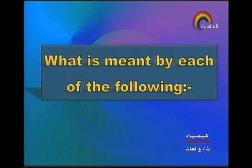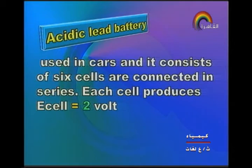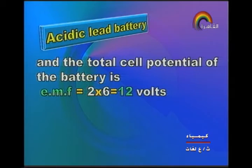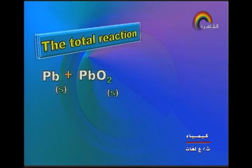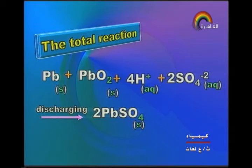Next type of question: what is meant by an acidic lead acid battery? It is used in cars and consists of six cells connected in series; each cell produces an electromotive force of 2 volts, and the total battery EMF is 2×6 = 12 volts. The total reaction: Pb + PbO₂ + 4H⁺ + 2SO₄²⁻ on discharging gives two molecules of lead sulfate PbSO₄ and two molecules of water. The EMF of one cell equals 2.05 volts.